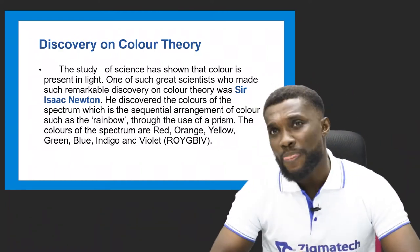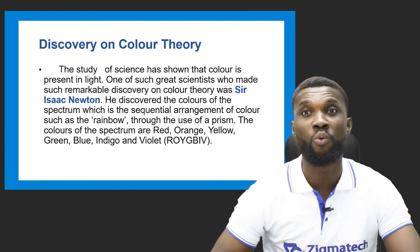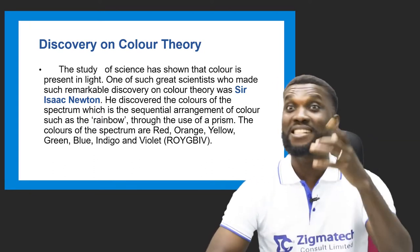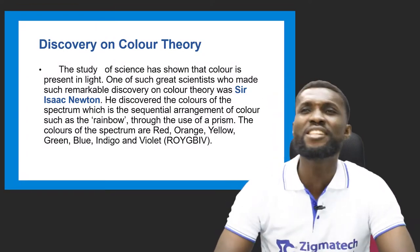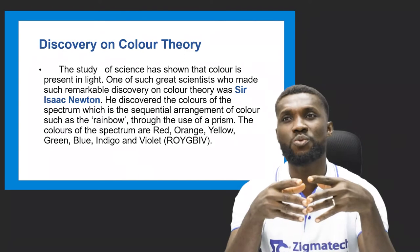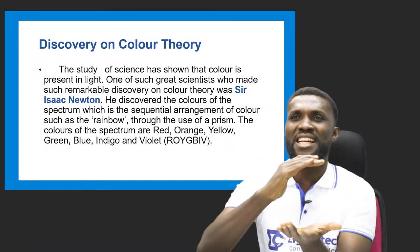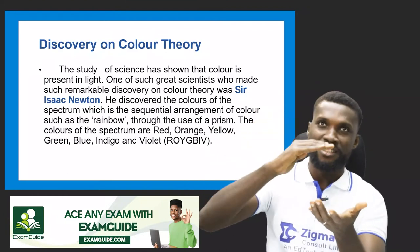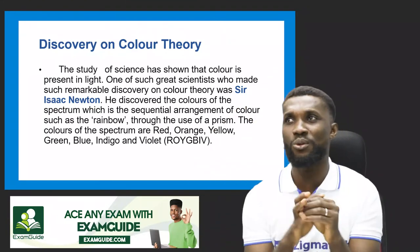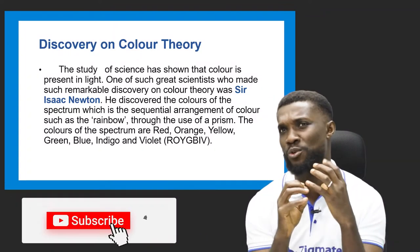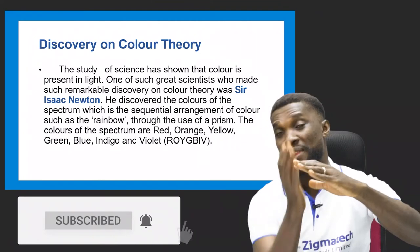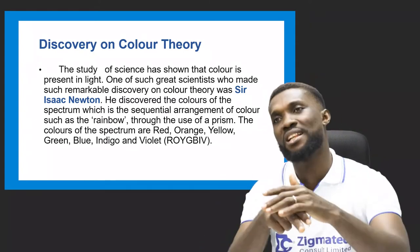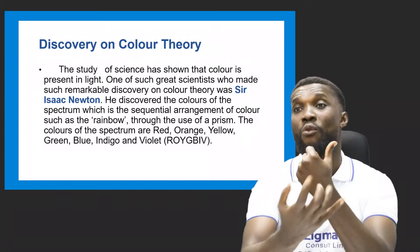One of the great scientists who made a remarkable discovery on color theory was Isaac Newton. Isaac Newton was the very first scientist that experimented about color. He discovered the color of the spectrum — which is a sequential arrangement, like the rainbow. When Isaac Newton did his practicals, he discovered that the colors in the spectrum were sequentially arranged in rainbow format, through his glass prism.